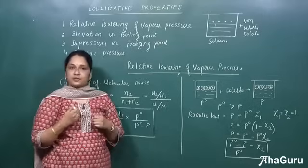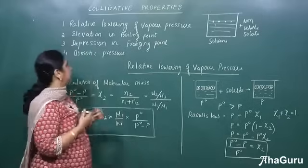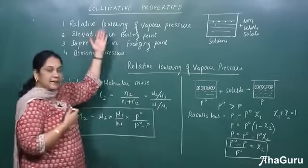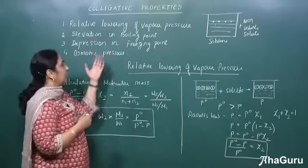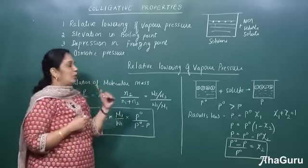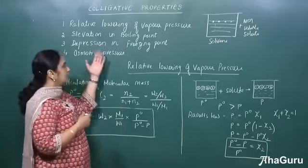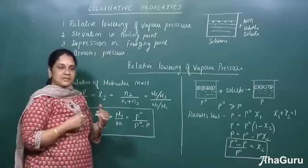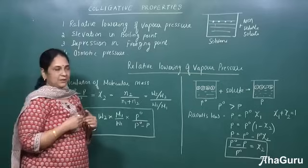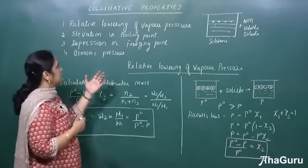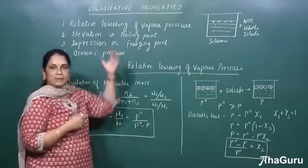These properties — wherein there is a change in physical properties upon adding a non-volatile solute — are called colligative properties. The different types are: relative lowering of vapor pressure, elevation in boiling point, depression in freezing point, and osmotic pressure. Let us see them one by one.